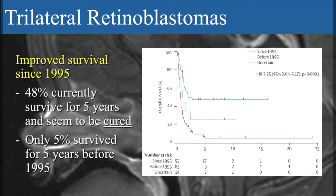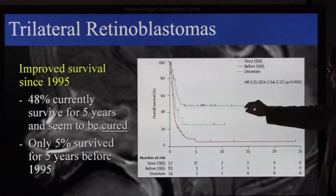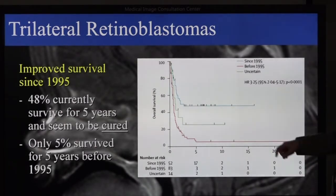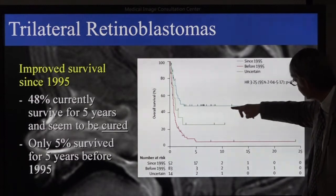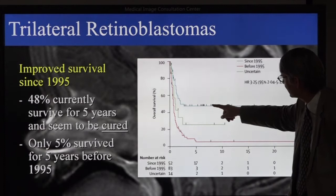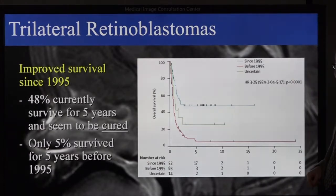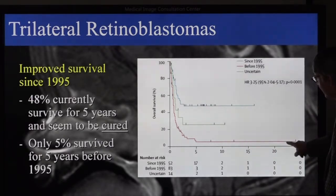What about the outcome? Survival has dramatically increased since 1995. It's almost 50% — 48% to be exact — who seem to survive, and we have several long-term survivors after five years from treatment who seem to be cured of trilateral disease. Whereas before 1995, there were hardly anyone who survived.